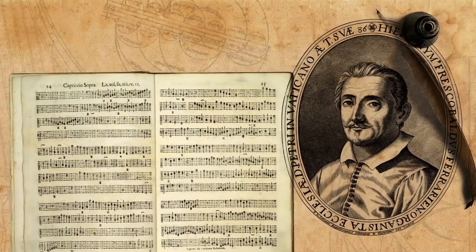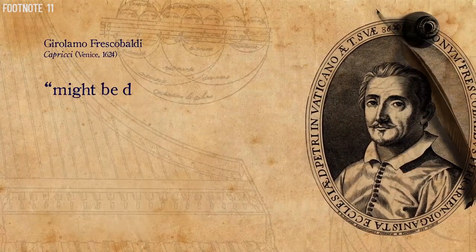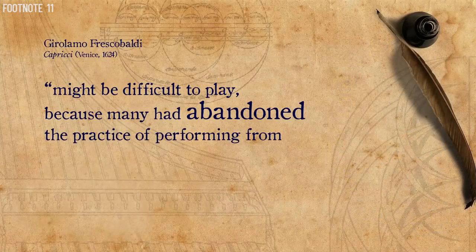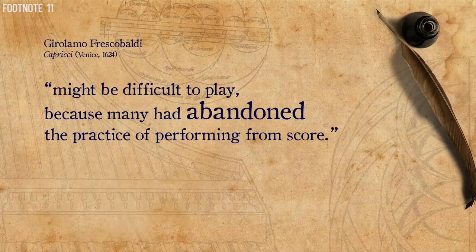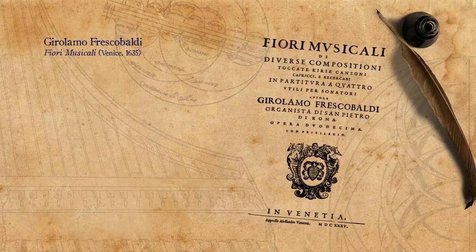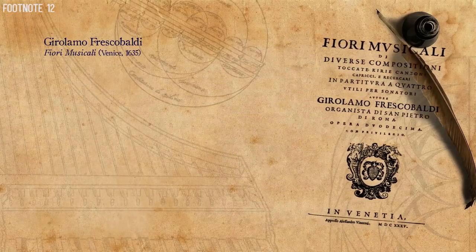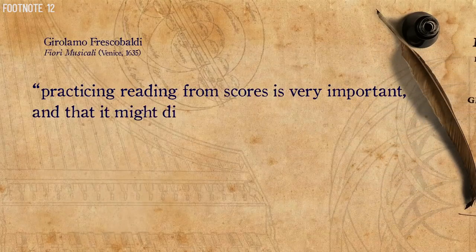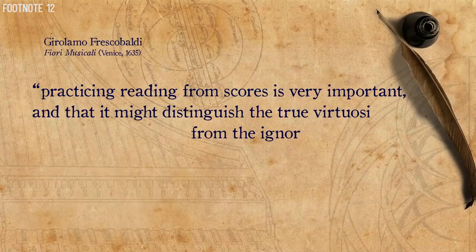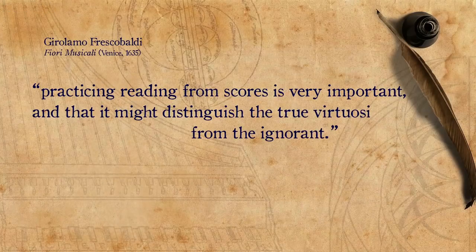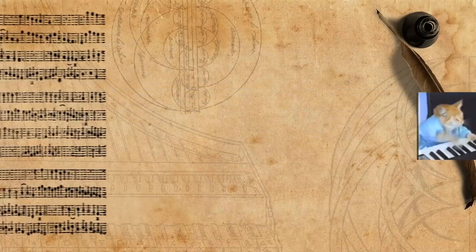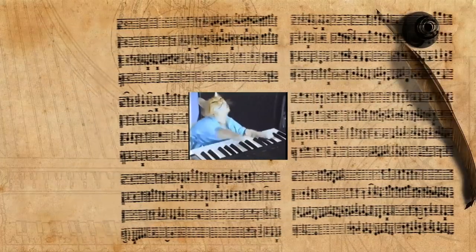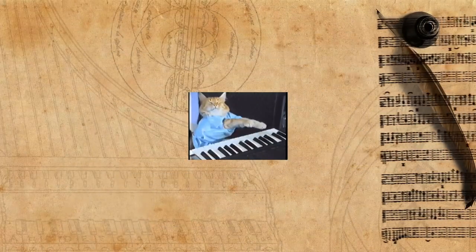In 1624 he wrote that his capricci might be difficult to play because many had abandoned the practice of performing from score. In 1635, in the preface for his famous Fiori musicali, he wrote that practicing reading from scores is very important, and that it might distinguish the true virtuosi from the ignorant. An interpretation of his statement might be that using the score differentiates those who see and understand the music from those who just play the right notes at the right time.